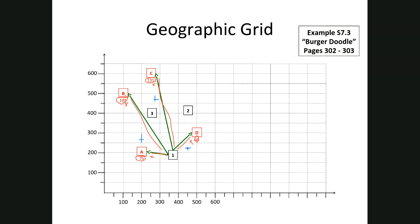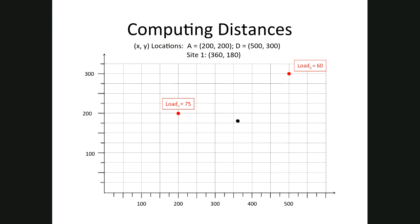That produces what we're going to call the load distance for site one. Then we're going to do the same thing for site two and site three and choose whichever one is lowest. To calculate the distances, we will use Excel, but you'll remember from high school algebra that to calculate the distance from A, which is at location (200, 200), to site one, which is at (360, 180), we use the straight-line distance formula.